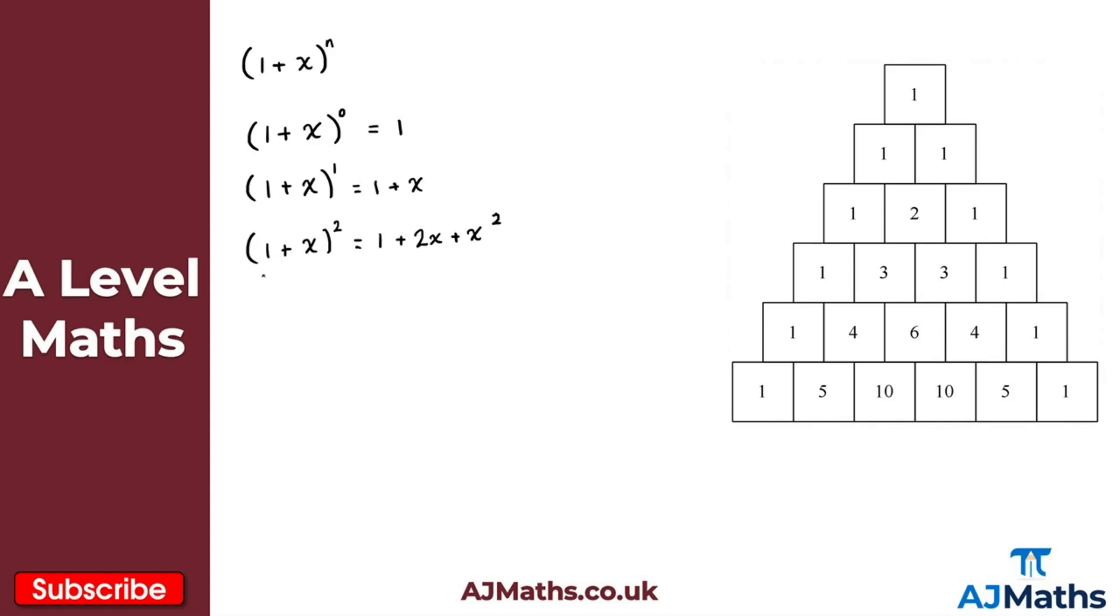So we say one plus x cubed. Then what we're going to get here is one, we get one again, plus three x plus three x squared, and then finally we've got plus x cubed. So notice we just go along here, and that gives us our coefficient.